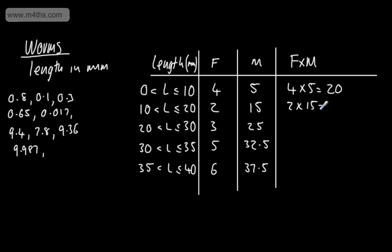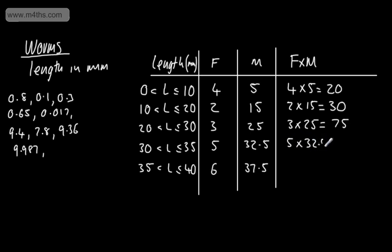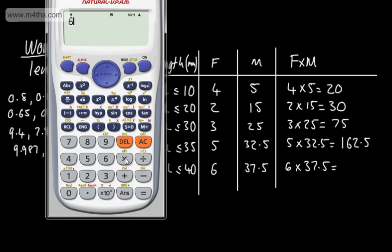2 × 15 = 30. 3 × 25 = 75. 5 × 32.5 = 162.5. 6 × 37.5 = 225.